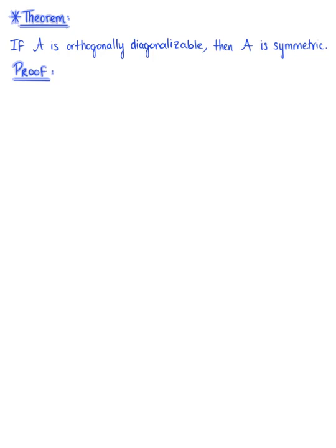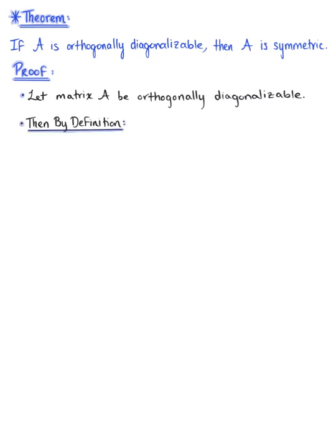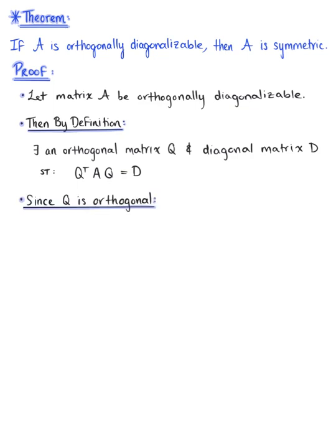So let's go ahead and verify that this theorem holds true. To begin, we want to let matrix A be orthogonally diagonalizable. Then by definition, we know this implies that there exists an orthogonal matrix Q and diagonal matrix D such that the transpose of matrix Q times matrix A times matrix Q is equal to the diagonal matrix D. Since matrix Q is an orthogonal matrix...